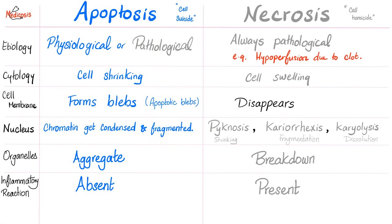We are done with cell migration. Let's talk about cell death. We have two types: apoptosis and necrosis. Each one has a street name. Apoptosis is cell suicide — it is planned, and it is an inside force. Cell necrosis is cell homicide — it is an outside force; something foreign to me is killing me. But apoptosis is something I did to myself.